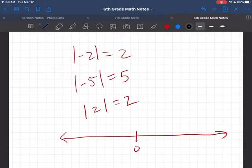So here's zero and then I'm going to use different color here. So negative two, let's plot that. One, two. Actually, let's go all the way to five on both sides. So we have negative one, negative two, negative three, negative four, negative five. And over here we have one, two, three, four, five.